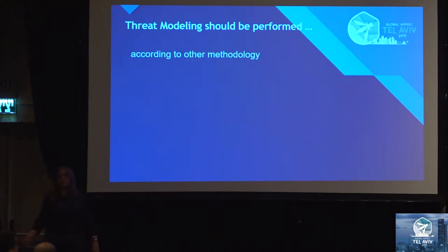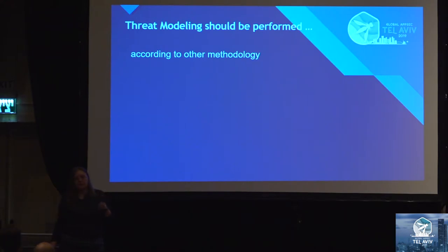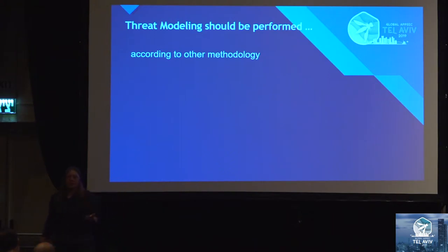We also have other methodologies — two of them are very similar. One is called ATT&CK and the second is security control enumeration. They're pretty similar, but one just enumerates all possible attacks on the asset, while the second also covers possible protection of your asset.